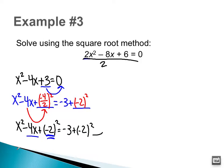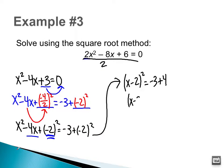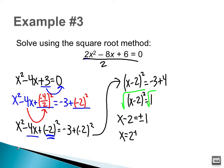Factoring, I have (x − 2)², which equals −3 + 4. Simplifying the right side, −3 + 4 is just positive 1. Now I'm at the point where I can take the square root: x − 2 = ±√1, which is ±1. Now I want to add 2 to both sides: x = 2 ± 1.